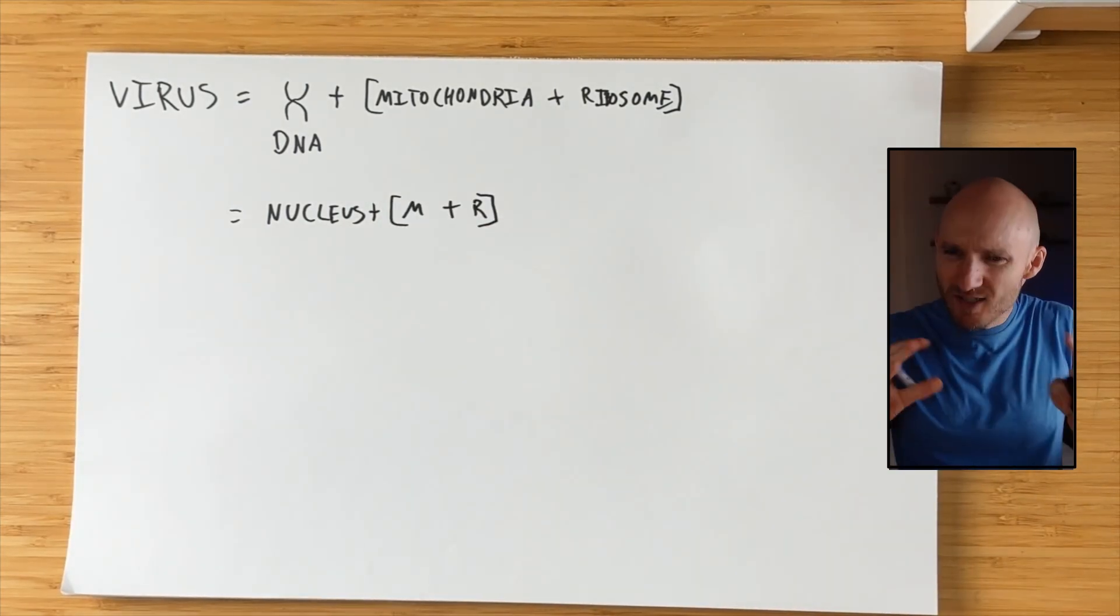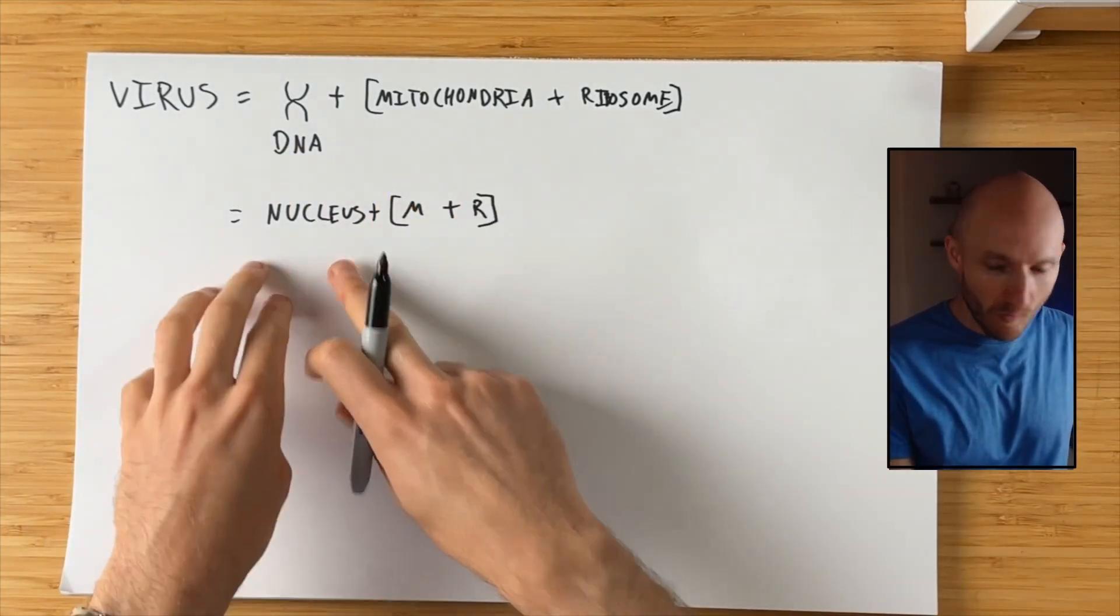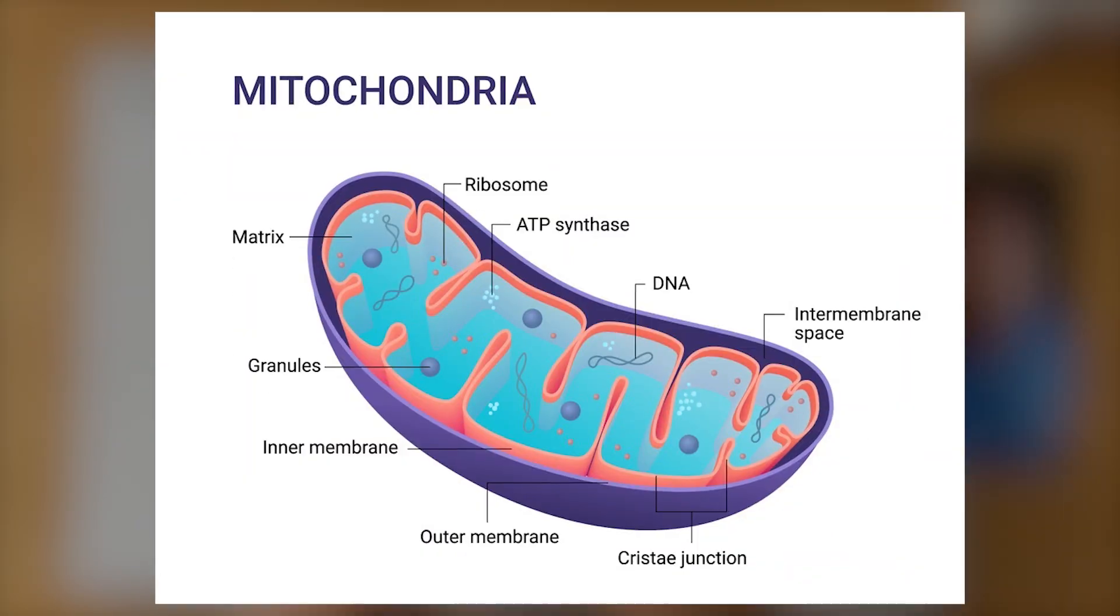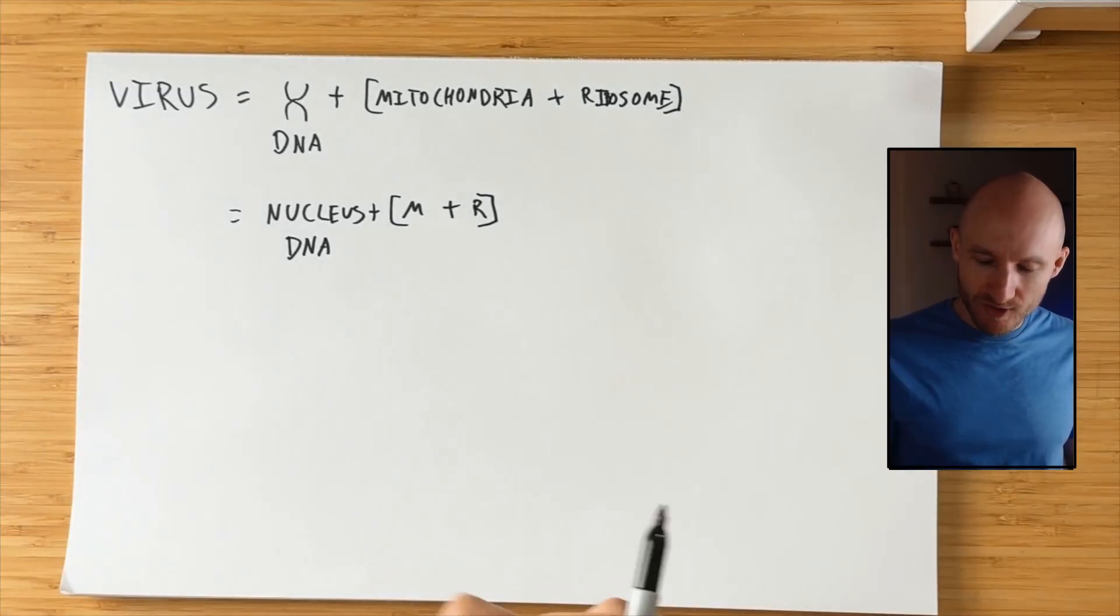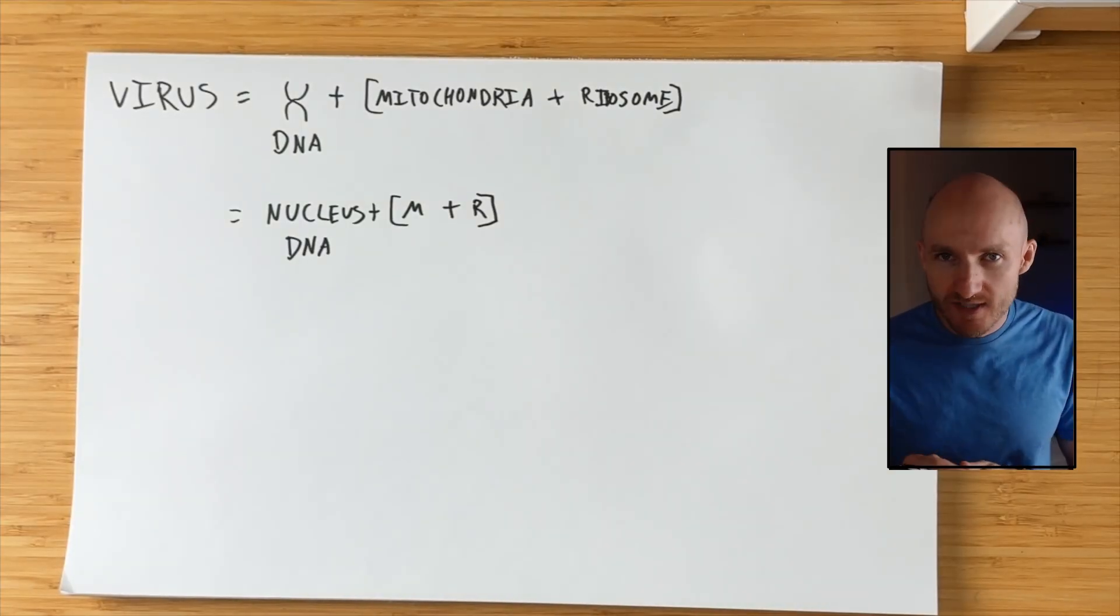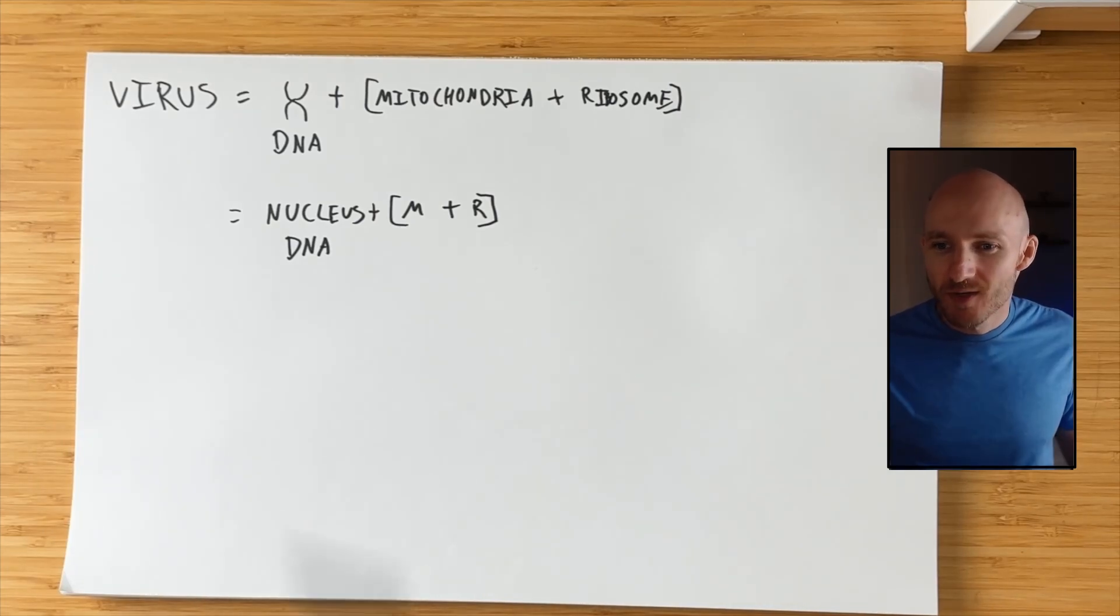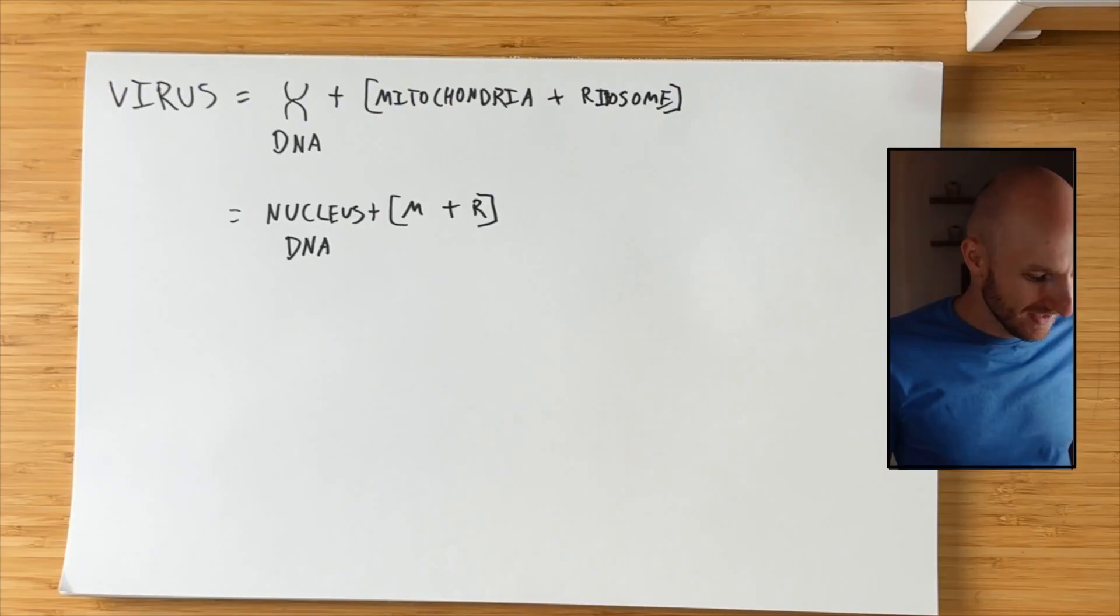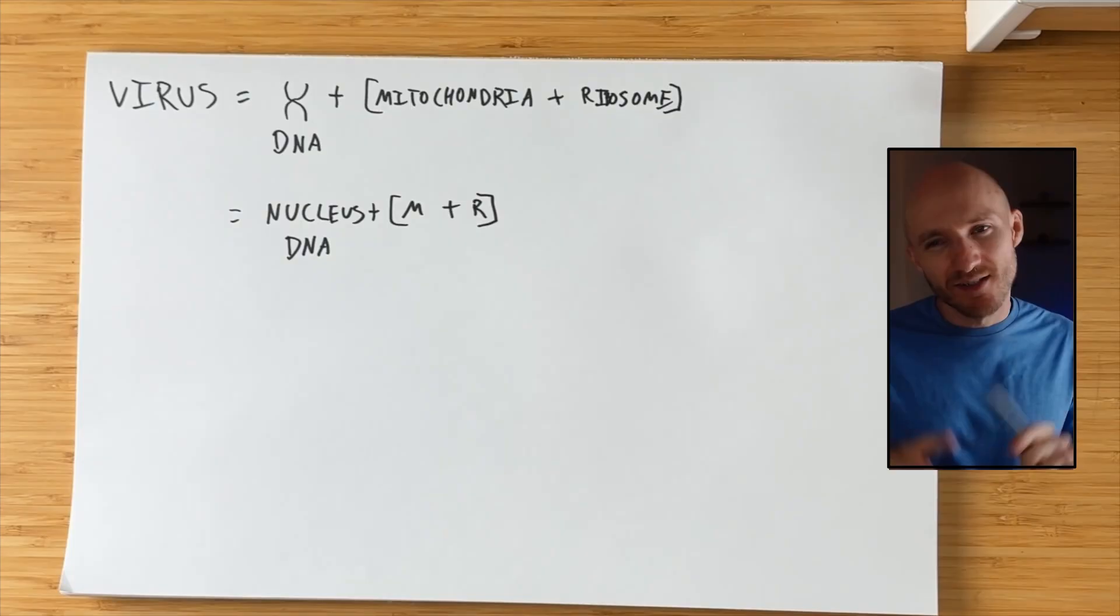And so I kind of get why something like a virus might not align with NASA's definition, because it's not self-sustaining. What a virus makes me think of is something more like us. We have our own DNA, and then that nucleus uses the mitochondria and the ribosome with the nucleus DNA. But in that way, it's a question of boundaries, right? You're saying the virus doesn't count because it's using its own DNA, it's using our mitochondria and ribosome, while we count because we have our own nucleus with its own DNA, and our own mitochondria and ribosome. But mitochondria is funny, because it has its own DNA.